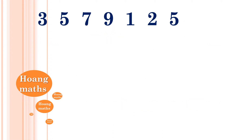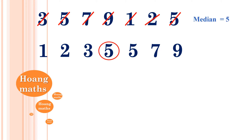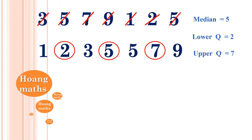To find the five-point summaries for this set of scores, first we rearrange them in order: 1, 2, 3, 5, 5, 7, 9. The median is the middle value, which is 5. The median of the lower half is 2, so the lower quartile is 2. The median of the upper half is 7, so the upper quartile is 7.